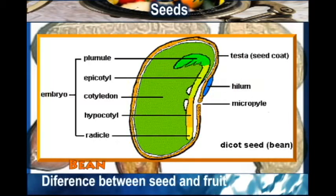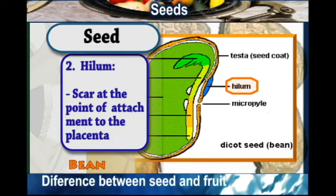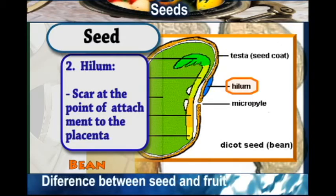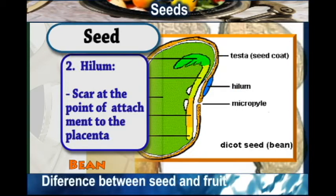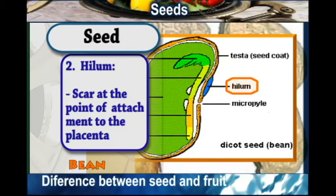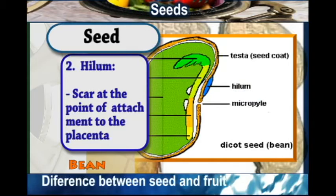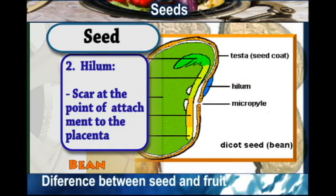The other part is the hilum. The hilum is a scar at the point of attachment to the placenta. That scar which remains at the point where the seed was attached to the placenta is what we refer to as the hilum.